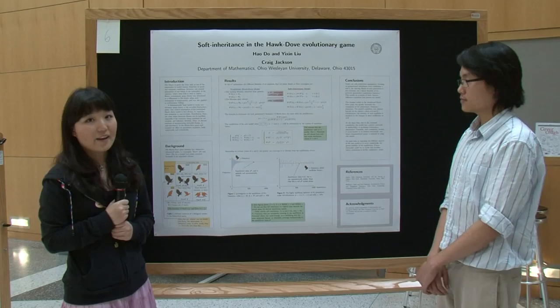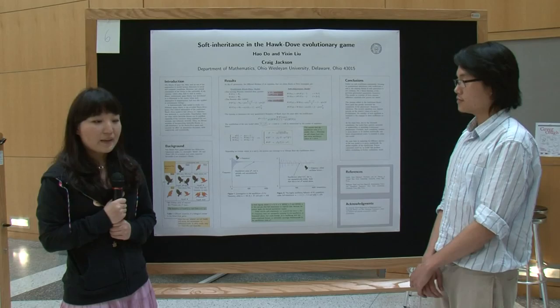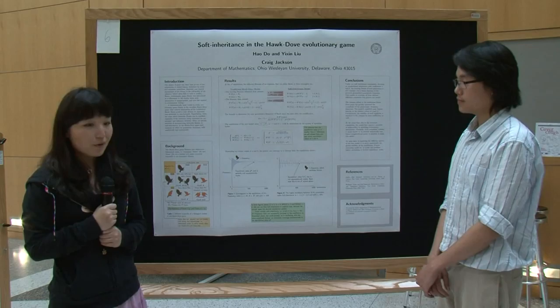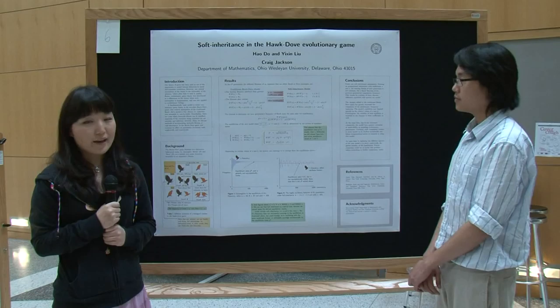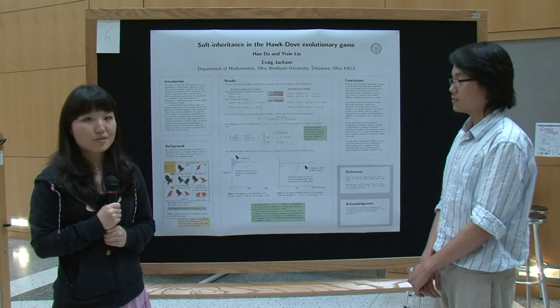When I talk about hawk and dove, I don't mean two animals or two simple players — I mean phenotypes, such as different behavior traits or different strategies. For example, the strategy of hawk behavior is to escalate until they get injured or the opponent retreats.